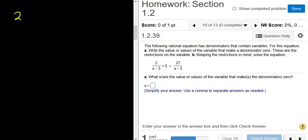So in this problem, we're given an equation: 2 over x minus 3 plus 5 equals 27 over x minus 3.